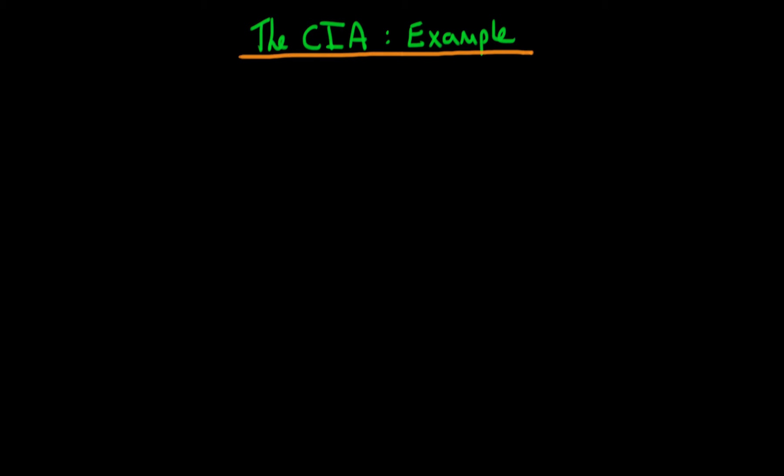In this video, I want to provide an example of how the conditional independence assumption can allow us to derive some sort of average causal effect, or technically the average causal effect conditional on something.